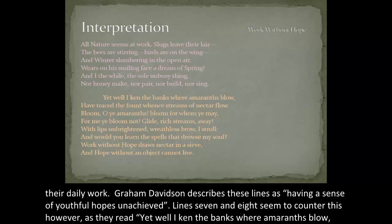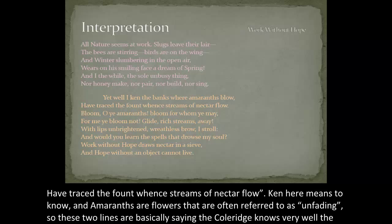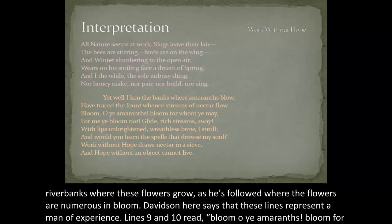Graham Davidson describes these lines as having a sense of youthful hopes unachieved. Lines seven and eight seem to counter this, however, as they read: 'Yet well I ken the banks where amaranths blow, have traced the fount when streams of nectar flow.' 'Ken' here means to know, and amaranths are flowers often referred to as unfading. So these two lines are basically saying that Coleridge knows very well the riverbanks where these flowers grow, as he's followed where they're numerous and bloom.